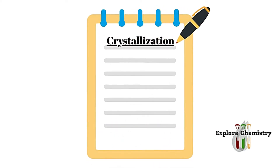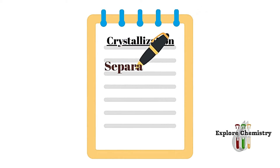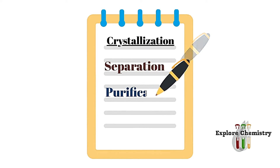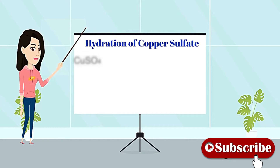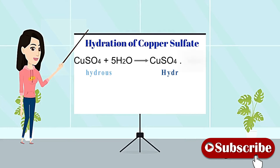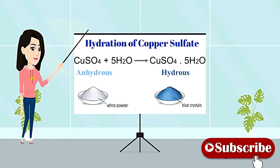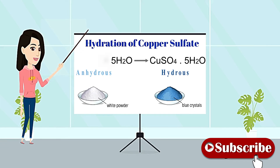Now let's make some notes about crystallization. Crystallization is a technique used for separation — it can separate solute from solvent, and is used for purification of the solute and to form crystals of the solute. In the case of copper sulfate, water molecules are attached, so this is known as hydration of copper sulfate. Before crystal formation, copper sulfate was anhydrous and white in color, but when water molecules attach, it converts into blue color crystals — known as hydrous copper sulfate. The five water molecules attached to copper sulfate are known as water of crystallization, because these water molecules give a perfect shape to the crystals.